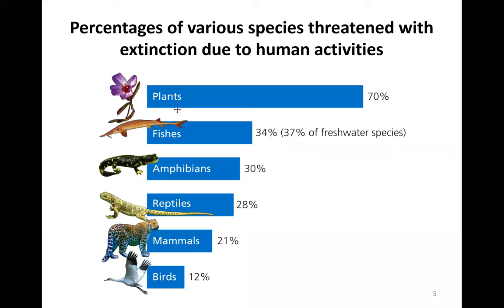This shows percentages of various species threatened with extinction due to human activities specifically: 70% of plants, 34% of fish species (37% specifically freshwater), 30% of amphibians, 28% of reptiles, 21% of mammals, and 12% of birds.